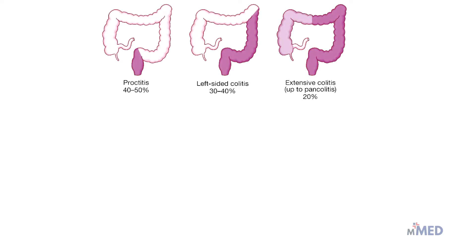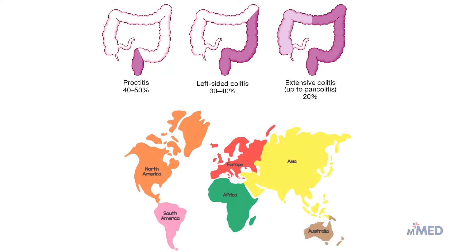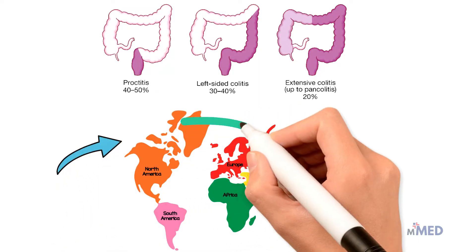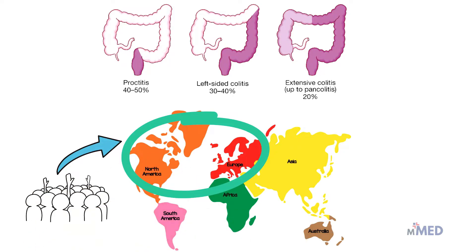The common patterns of disease distribution in ulcerative colitis: approximately 40–50% of patients have proctitis, the most common location involving the sigmoid colon; around 30–40% have left-sided colitis involving the whole descending colon; and in 20% of cases the whole colon is involved, known as extensive colitis. Ulcerative colitis is more prevalent in North America and Europe, and the age of onset is typically between 15 and 40 years.